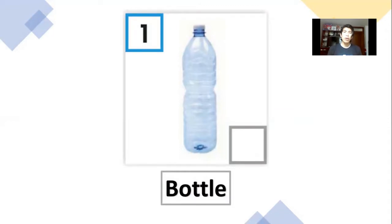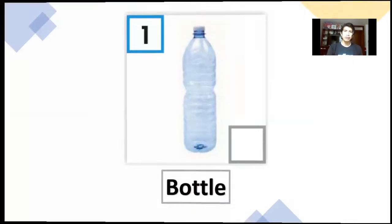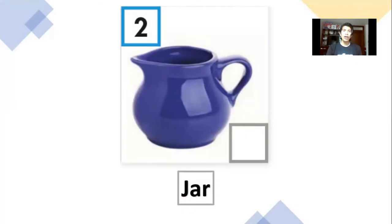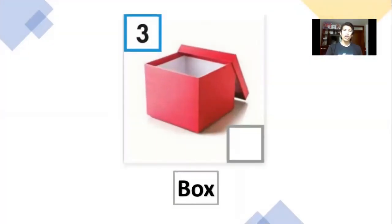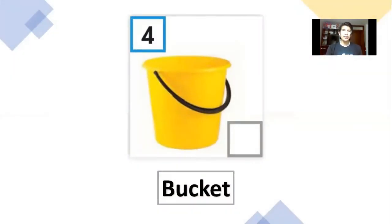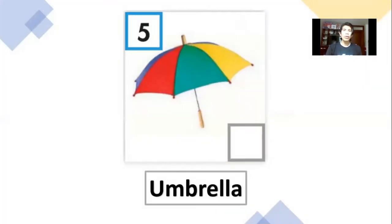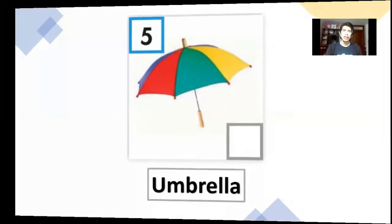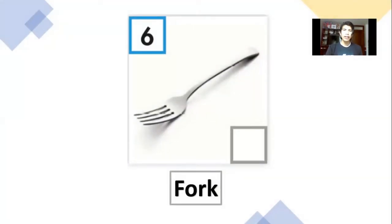Repeat after me: bottle — very good. Jar — very good. Box — very good. Bucket — very good. Umbrella — very good. Fork — very good. Now we have the six objects.